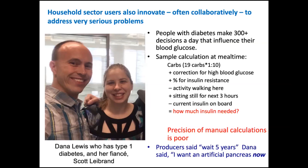This happened to Dana Lewis - she didn't die, but she almost did. If you take too much insulin at bedtime you can drive your blood sugar down to the level where you go into a coma. She made a mistake in her calculations, drove her blood sugar too low, woke up, could see the juice box on her bedside table for such an emergency - but she'd waited too long and could not move her muscles to pick it up and save her life. Her husband Scott Leibrand saved her.